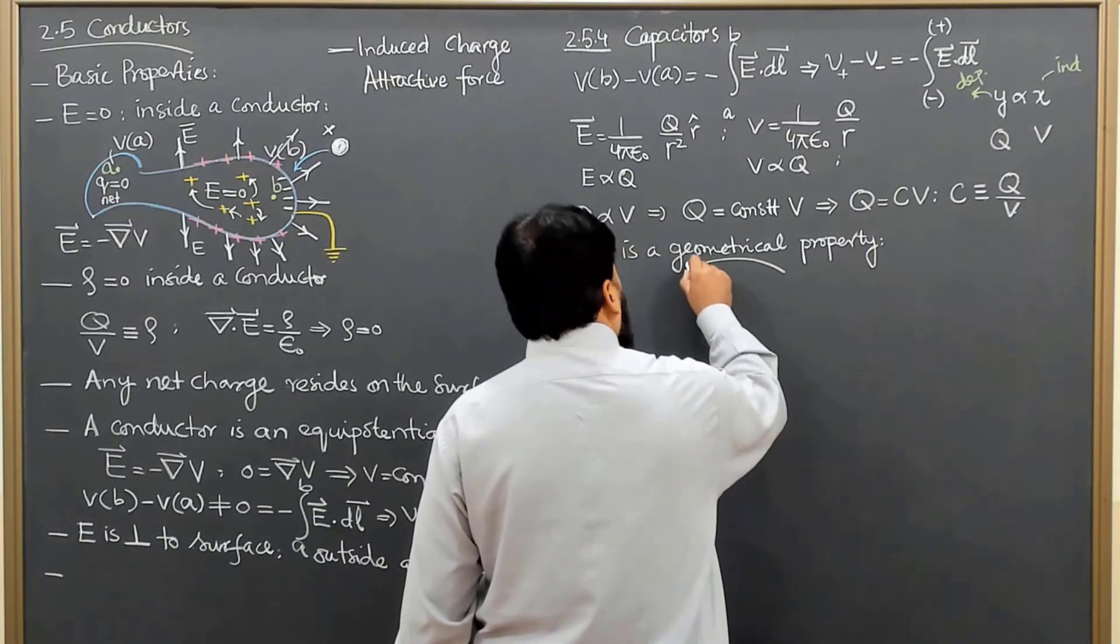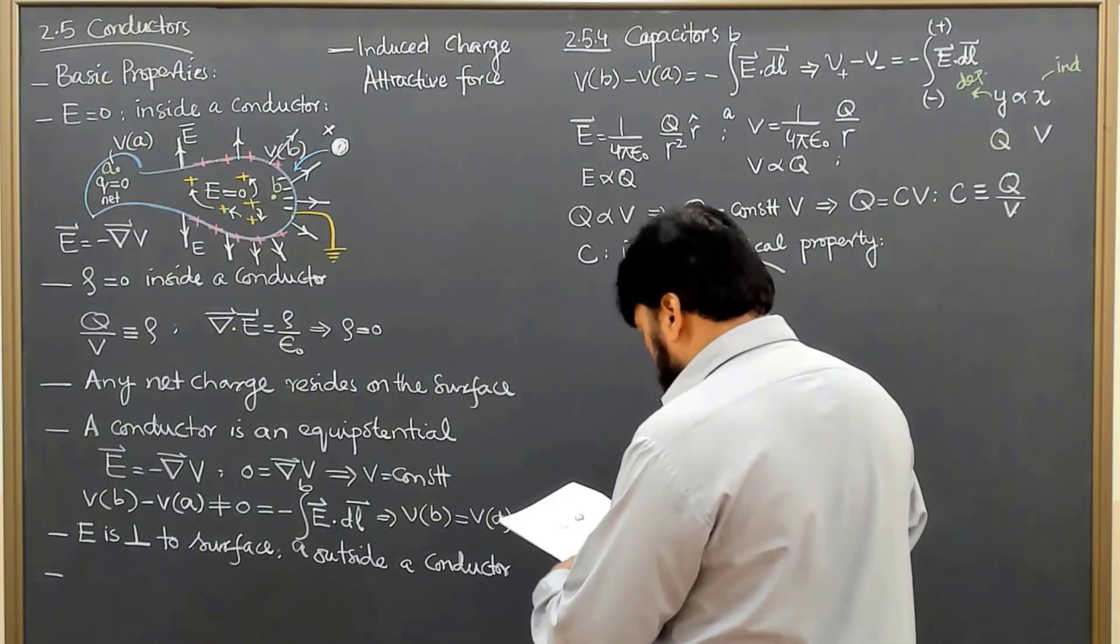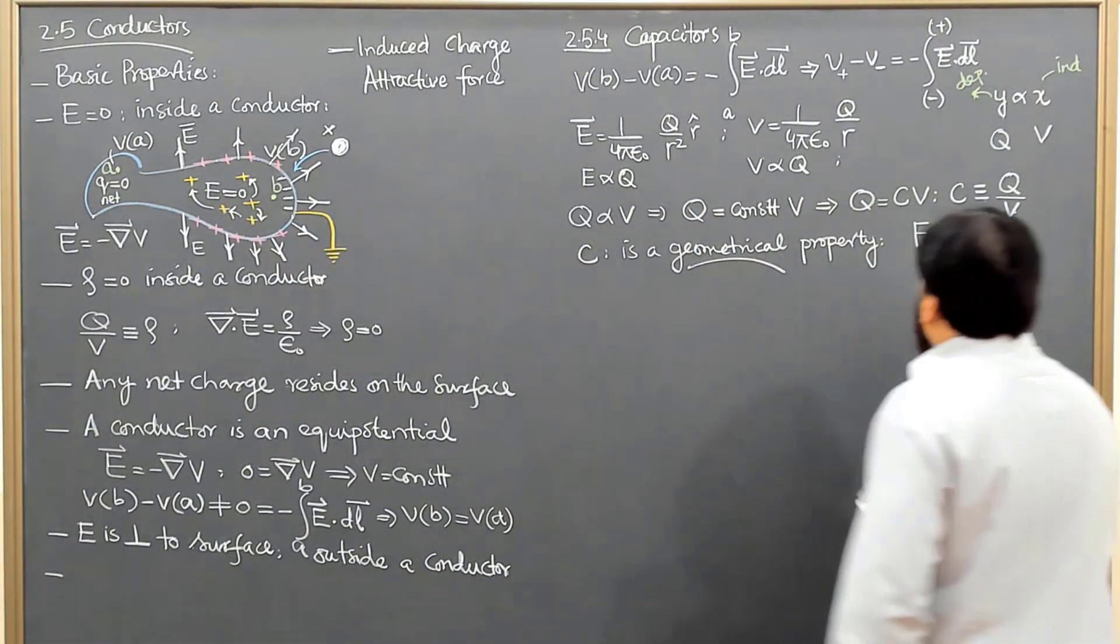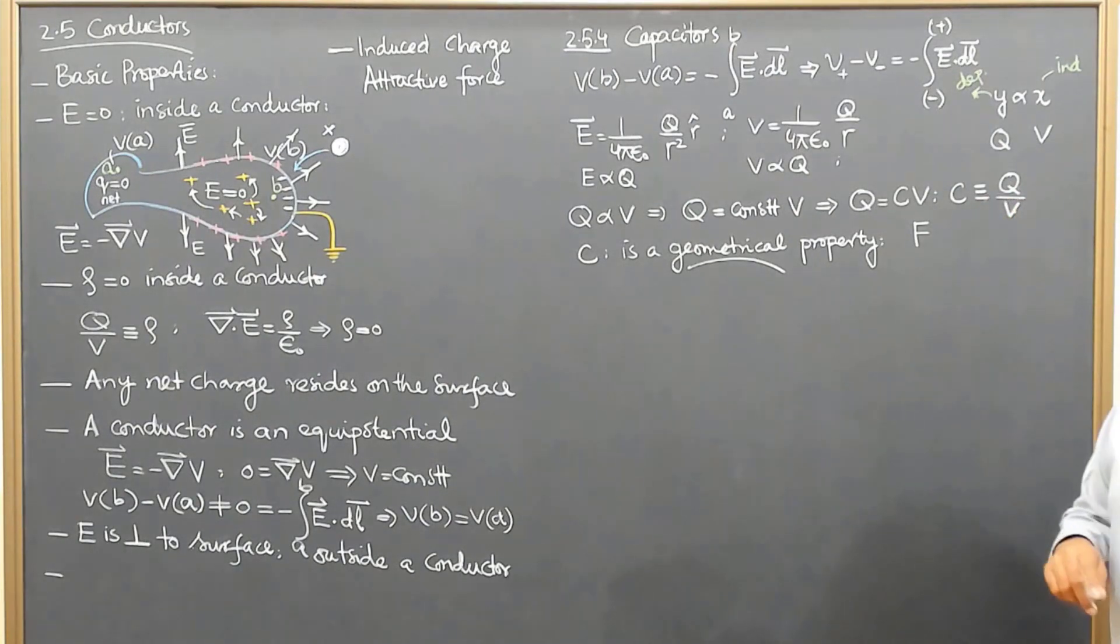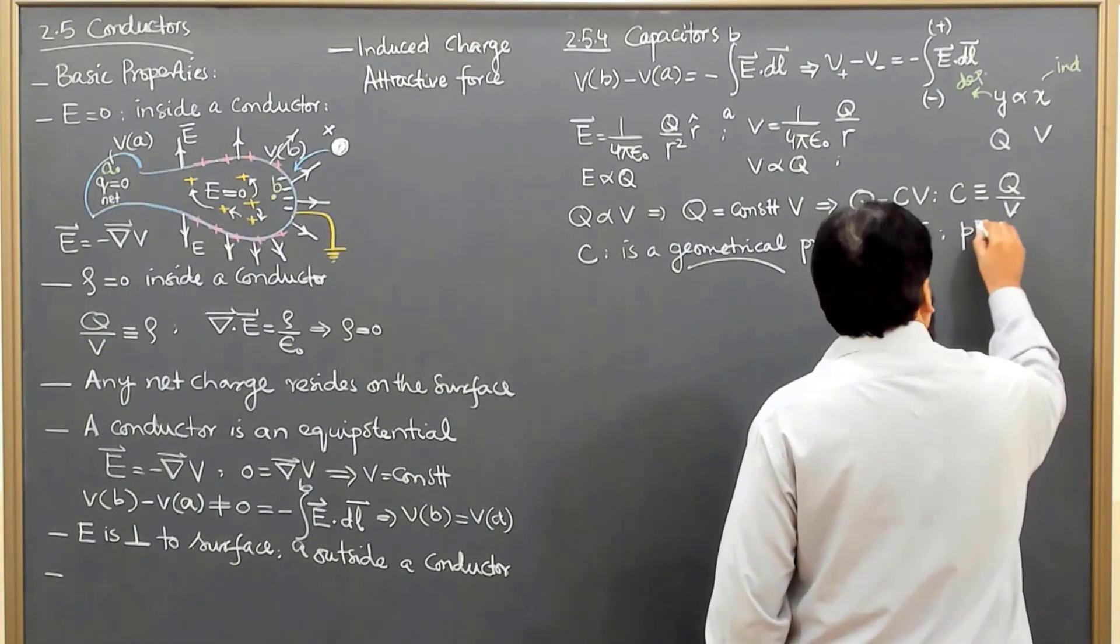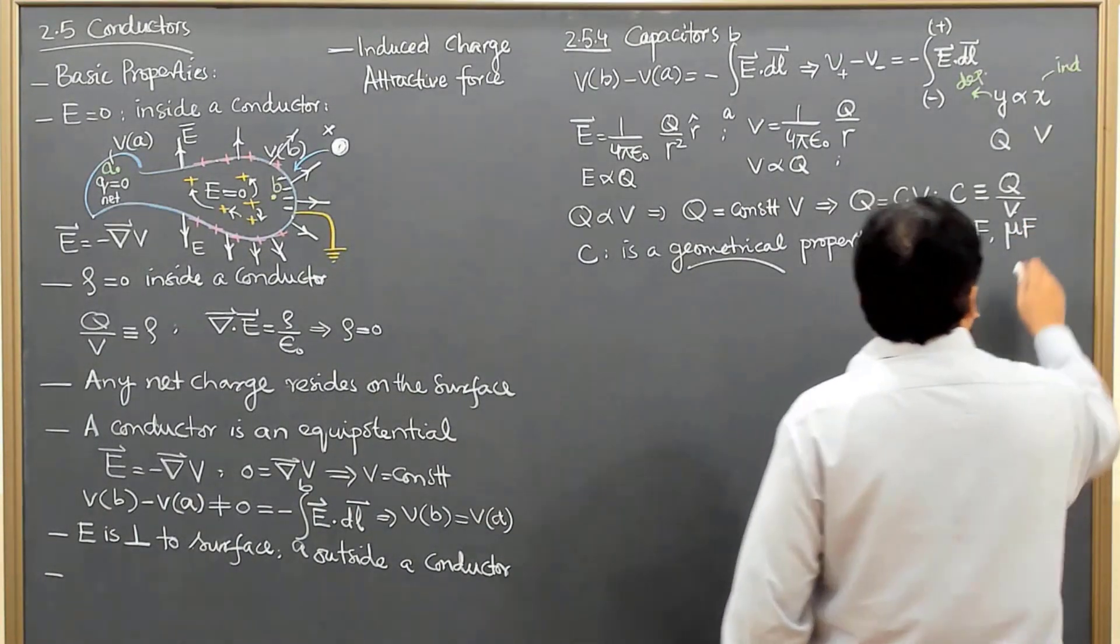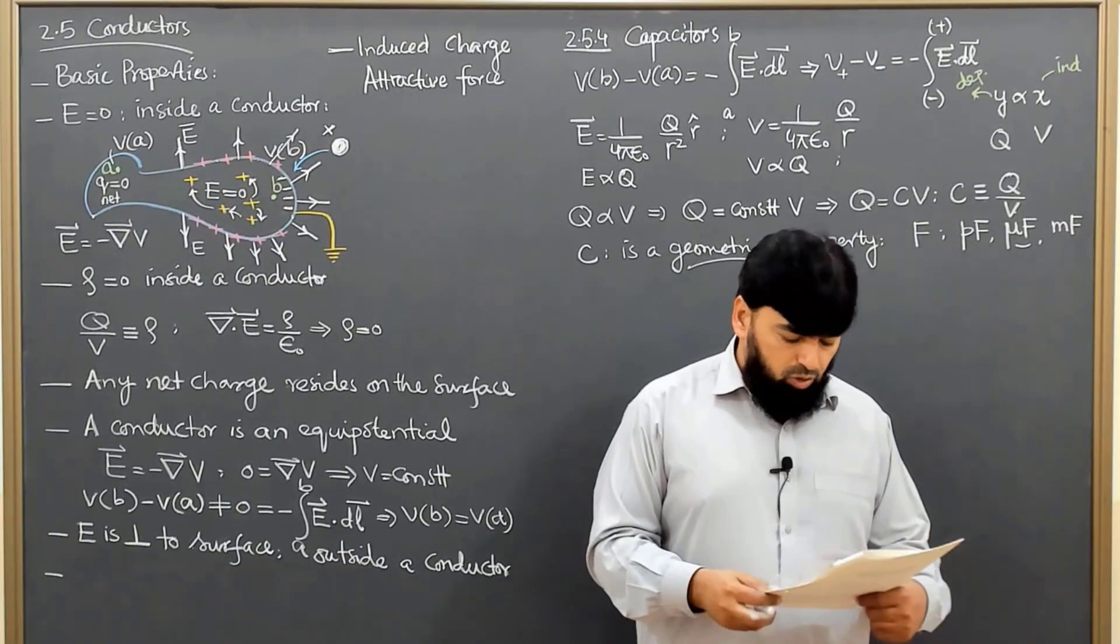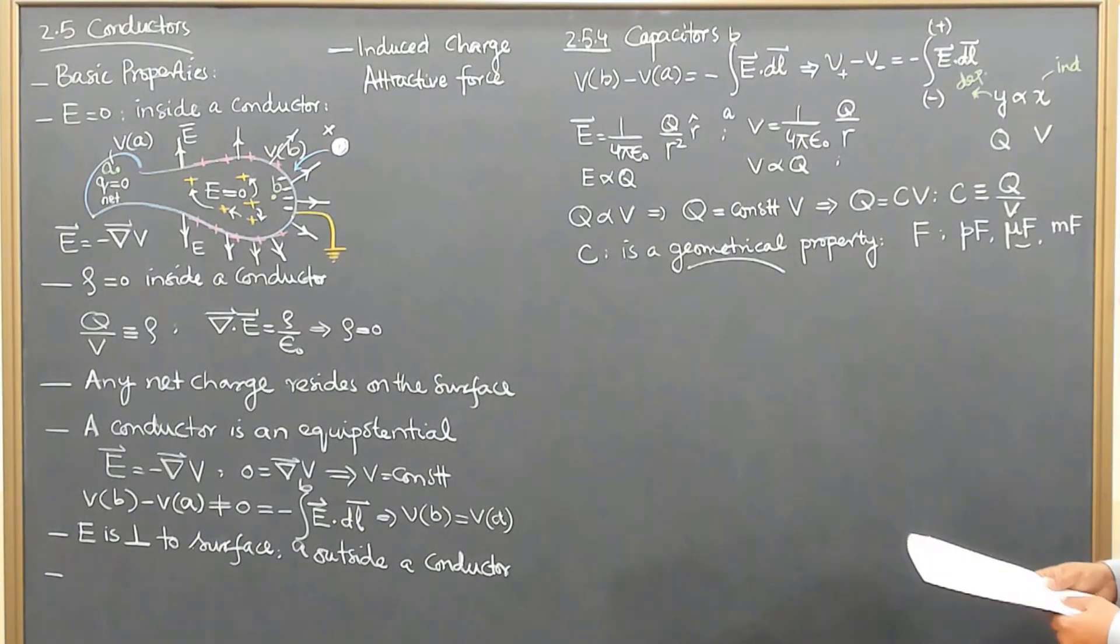It is purely a geometrical property with nothing to do with Q and V. It is measured in units of Farad. As coulomb is a very big unit of charge, Farad is a very big unit of capacitance. We usually use picofarad capacitors in daily life, or when big capacitors are required, they are in microfarad and very rarely millifarad. Usually they are in micro and picofarad.